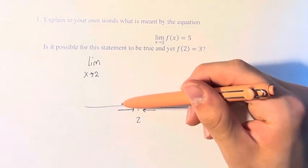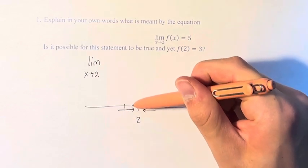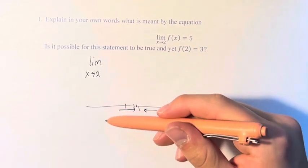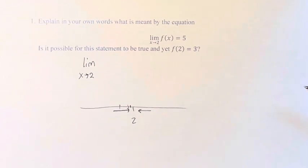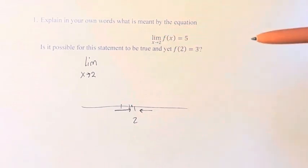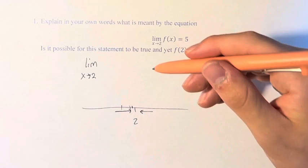So this would be 1.9, 1.99, 1.999, and so on, getting as close to 2 as possible. And the limit means we go, quote unquote, infinitely towards 2 without ever actually reaching it.